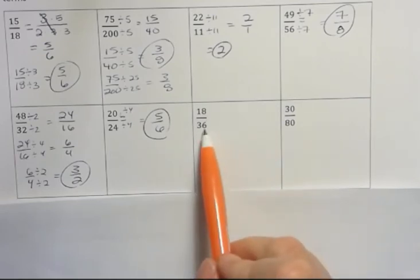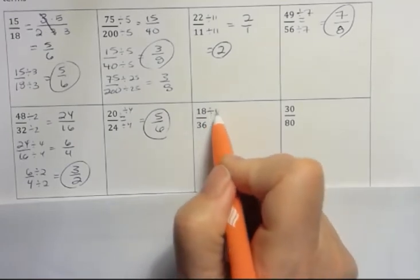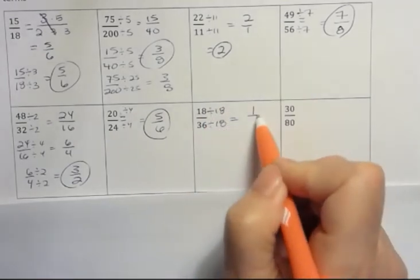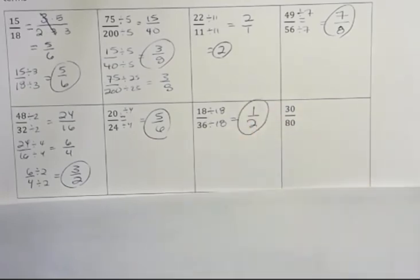Look at 18 over 36. Half of 36 is 18, so I know that's one half. What I'm doing is dividing both the numerator and the denominator by 18 to get one half. Maybe you would have started with 3, or maybe you would have started with 9, and you would have taken you two steps. That's okay.